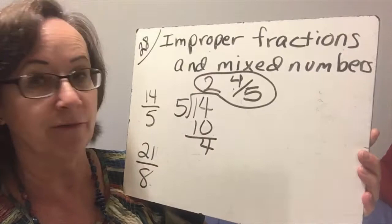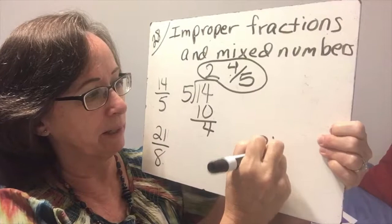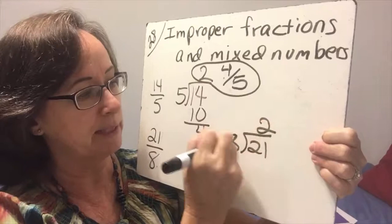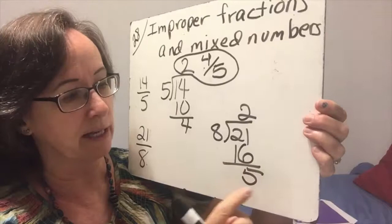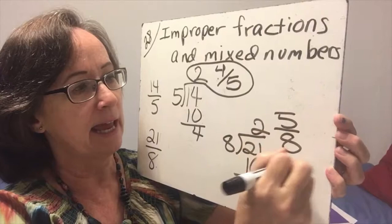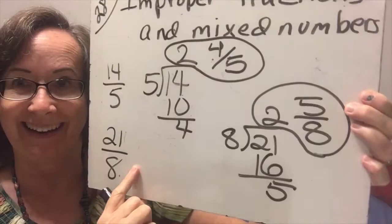21 eighths. So we're going to divide 21 by 8. 8 goes into 21 two whole times. 2 times 8 is 16. We subtract, we get 5 leftovers, but that is 5 out of a whole of 8. So 5 eighths. And 2 and 5 eighths is the same as 21 eighths.